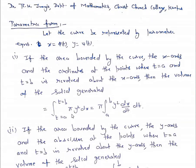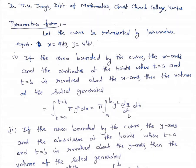This is the formula we learned earlier. Now in this case we shall put the limits for t from a to b, and we write dx as (dx/dt)·dt. So the formula for volume becomes: V = π∫[a to b] y² (dx/dt) dt.